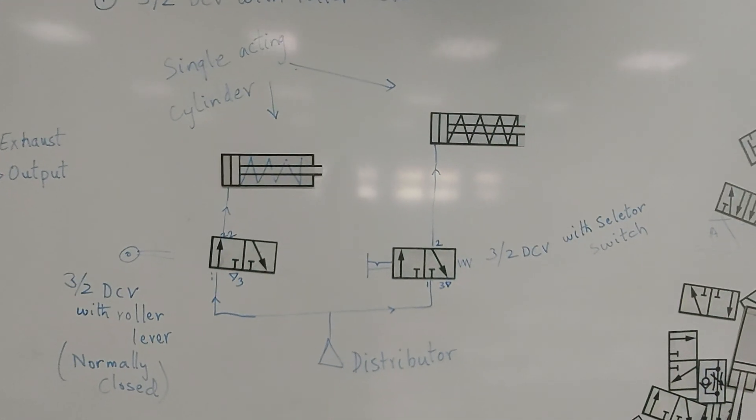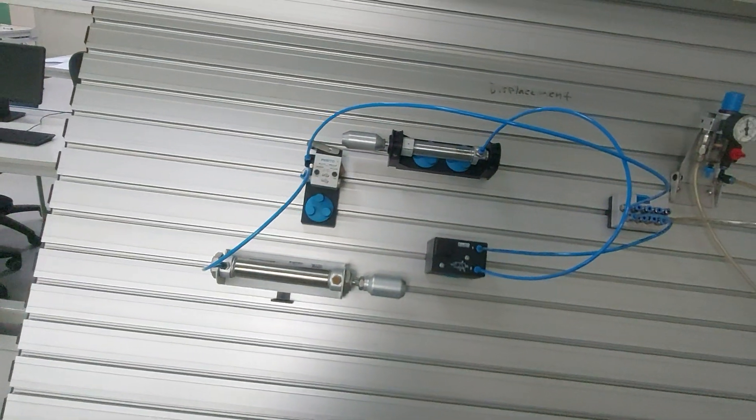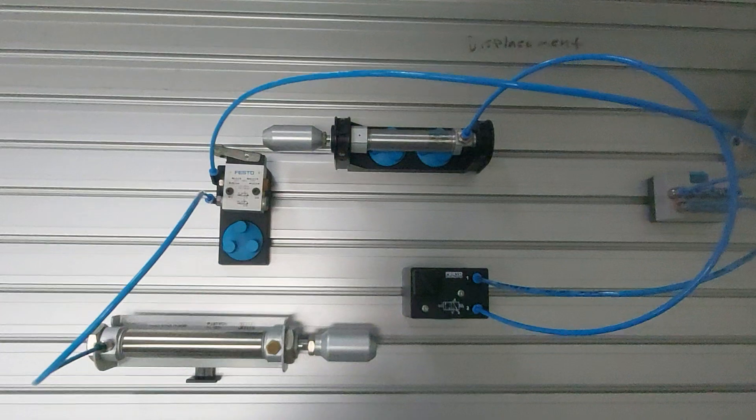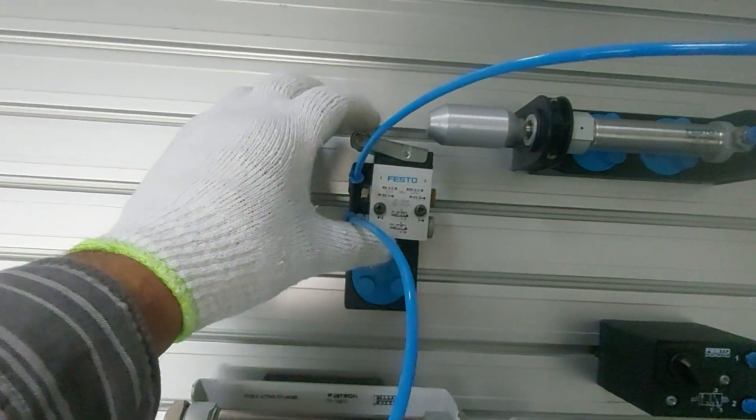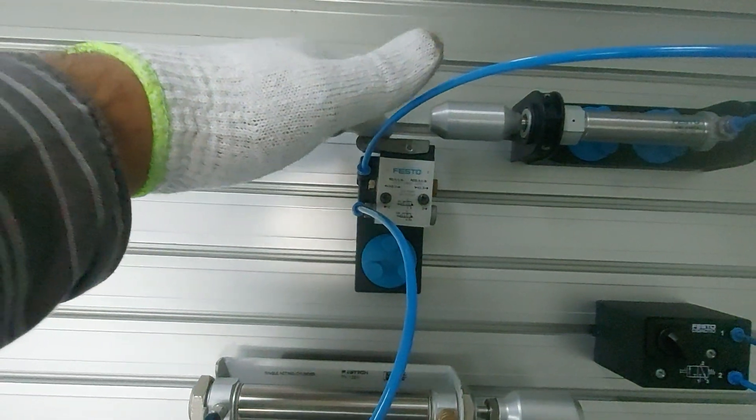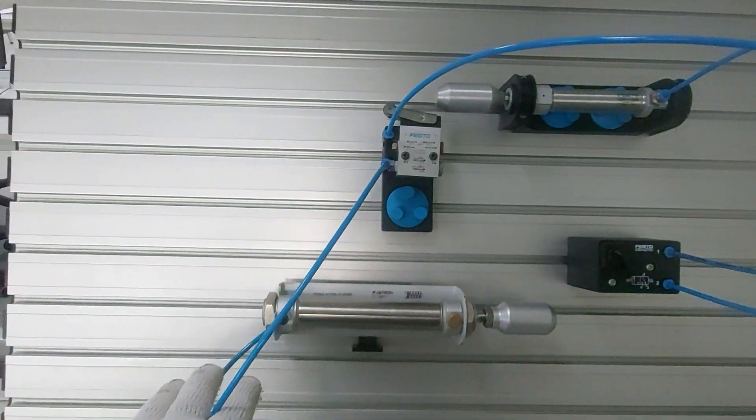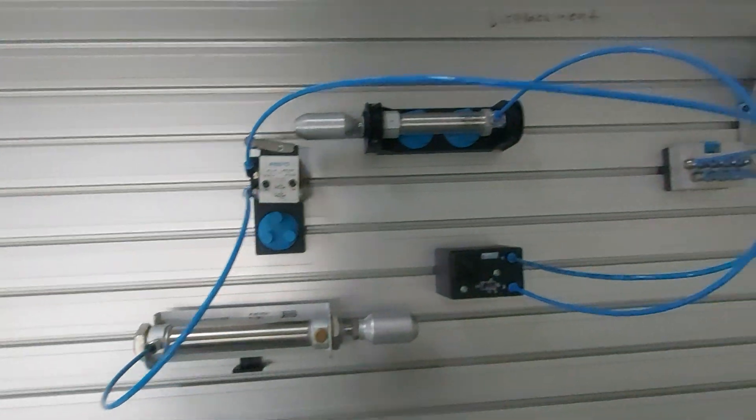So let's see in the circuit how it works. Here you have the connector circuit for the roller lever. In actual it looks like this, and when this cylinder comes and actuates this, it will supply air to the other cylinder.